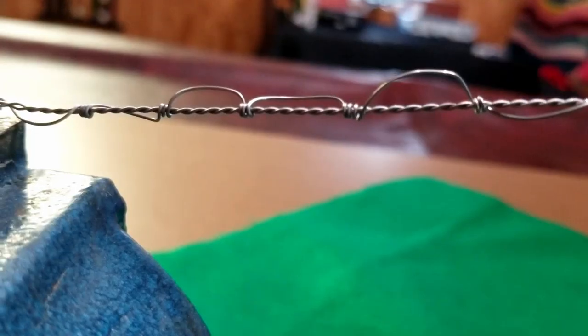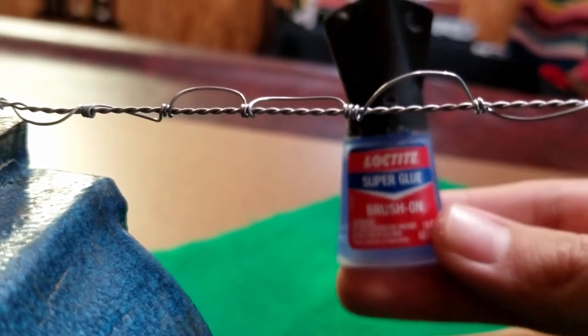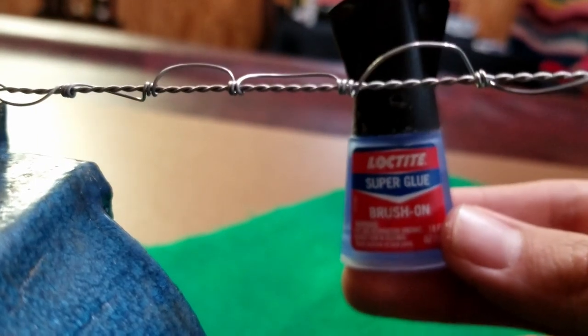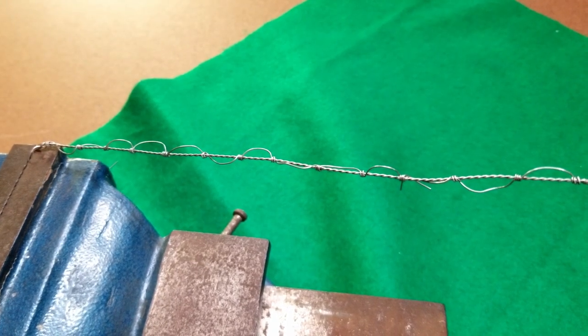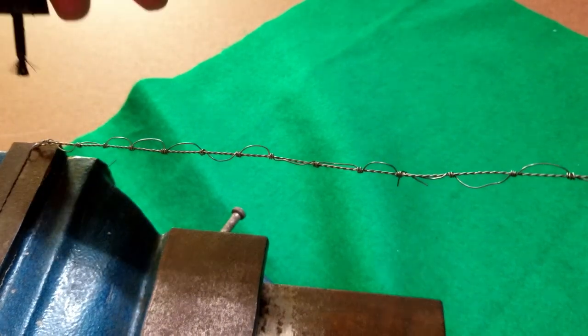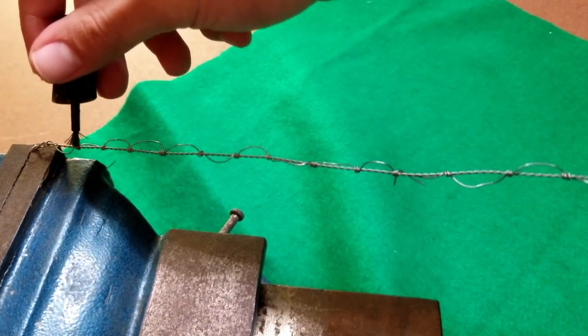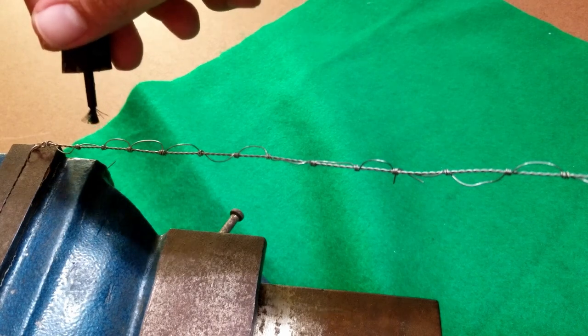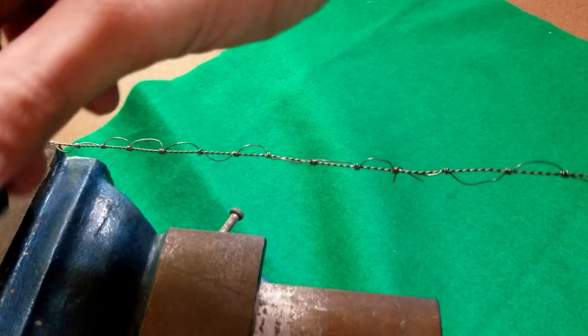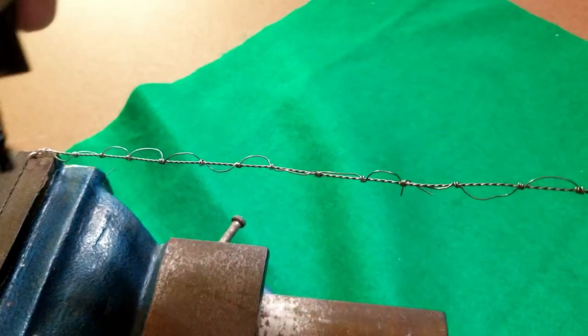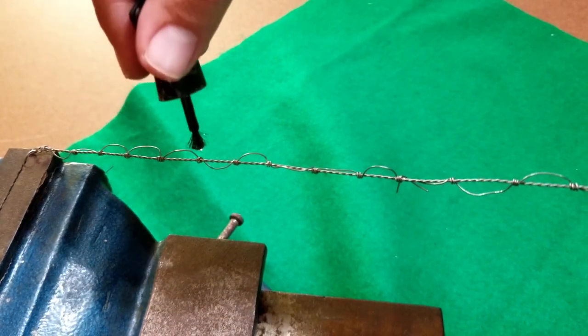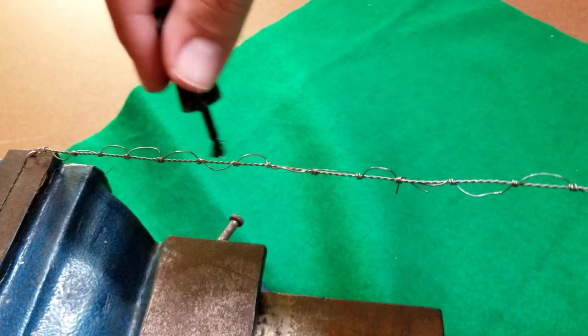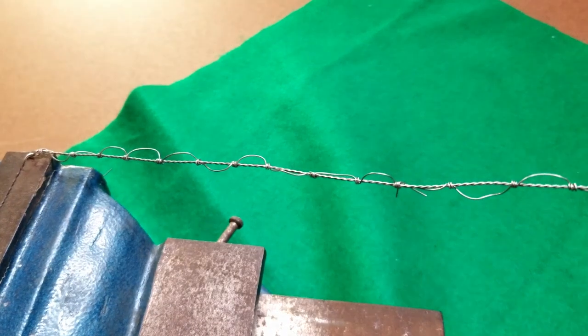Sometimes, the extra thin cement doesn't bond the way you want. You might need to use some Loctite super glue or any brand of brush-on super glue. This will be more viscous, so it'll bond the knots to the braid a little bit easier, but it shows up more when you paint it. You can cover that up by making it look like rust or corrosion or caked on mud, but if you want to avoid that, making sure that you use the minimum amount is the best thing to do.